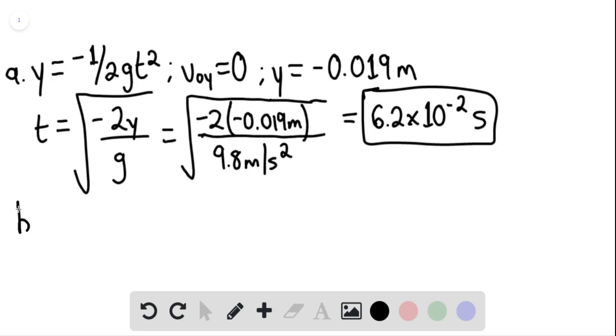For part b, the muzzle velocity is the same as the initial horizontal velocity of the bullet. Because x is equaling 30 meters,